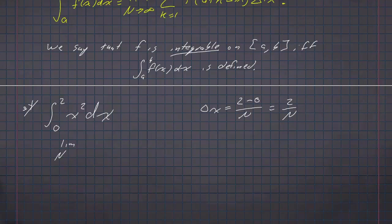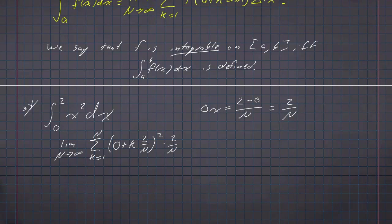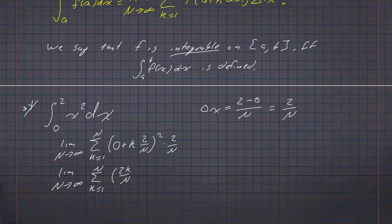And we're going to take the limit as n goes to infinity of the sum, k goes from 1 to n, of the function x squared evaluated at 0 plus k times delta x, which is 2 over n — squaring that — and then multiplied by delta x, which is 2 over n. Simplifying a little bit: 0 plus k times 2 over n we can write more simply as 2k over n, that thing still being squared.